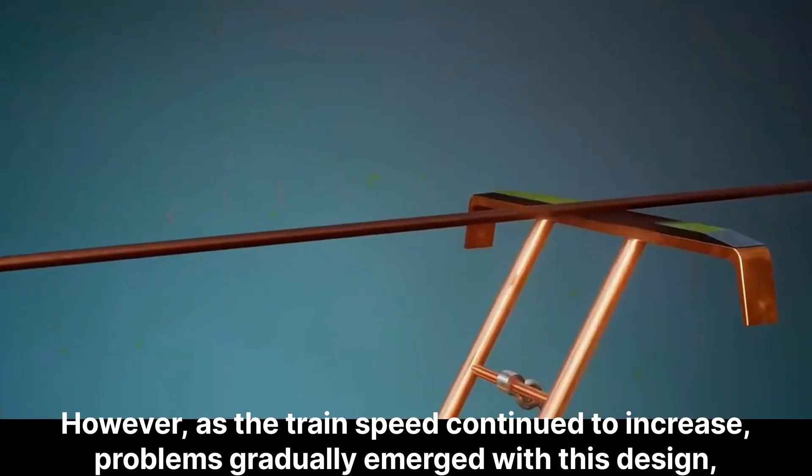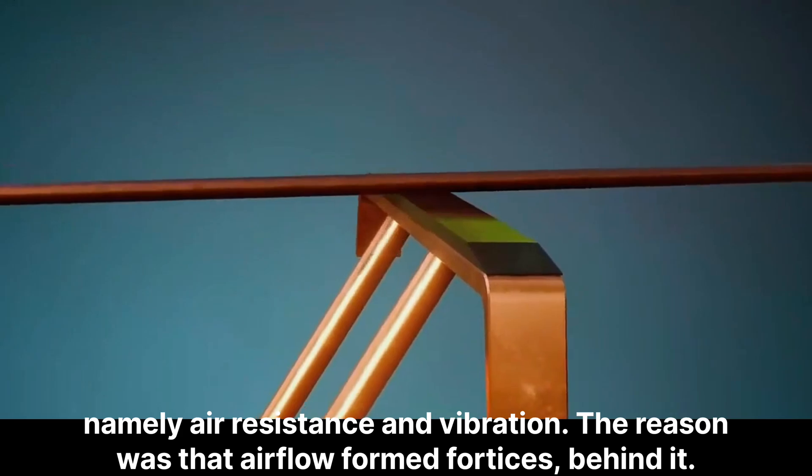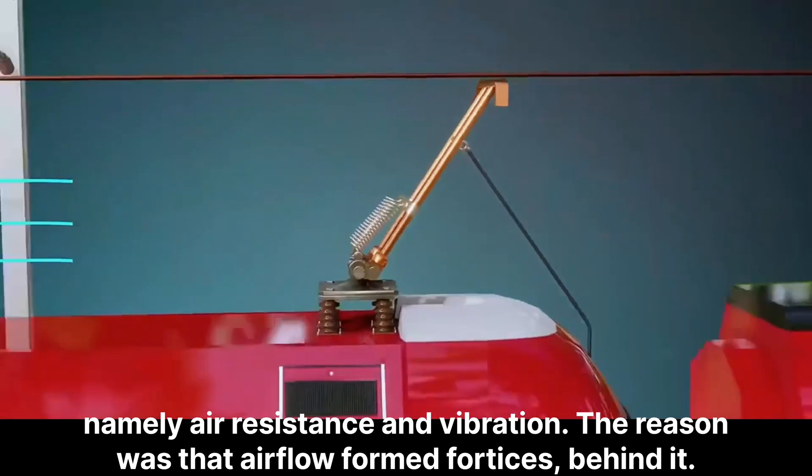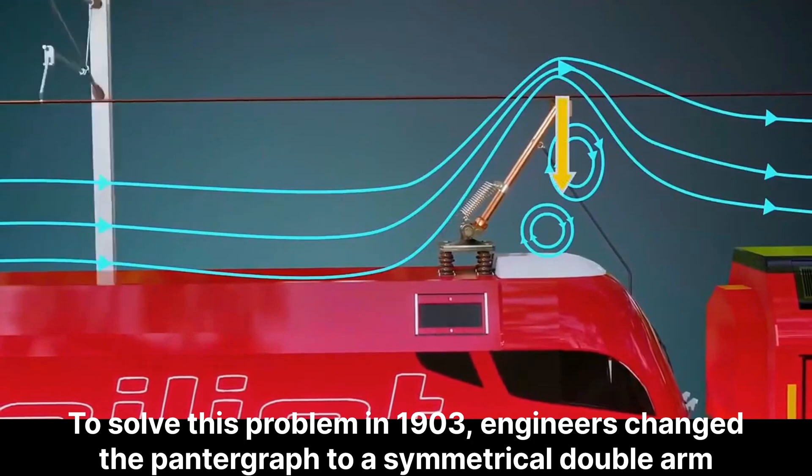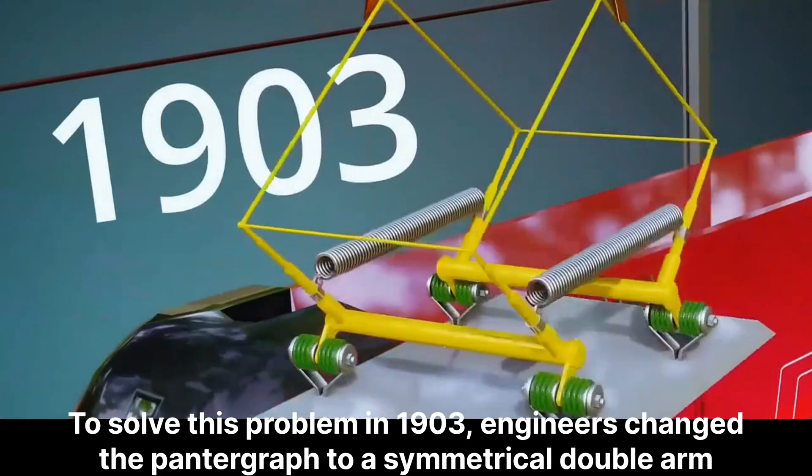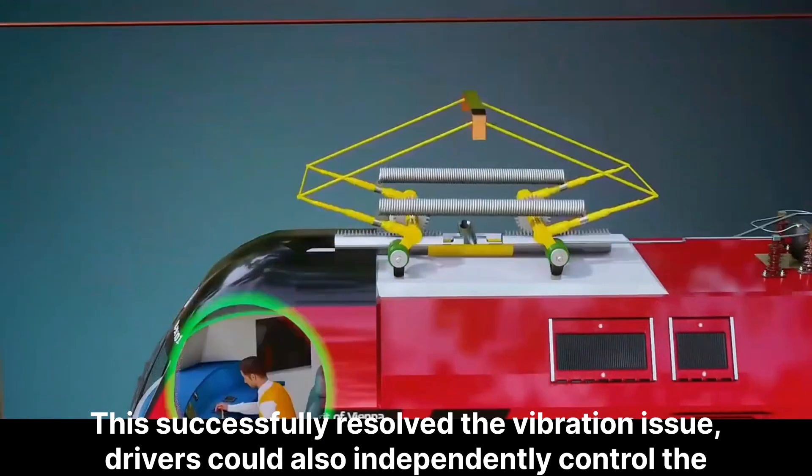However, as the train speed continued to increase, problems gradually emerged with this design, namely air resistance and vibration. The reason was that airflow formed vortices behind it. To solve this problem in 1903, engineers changed the pantograph to a symmetrical double arm structure. This successfully resolved the vibration issue.